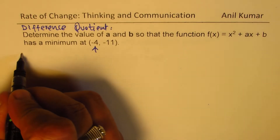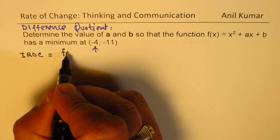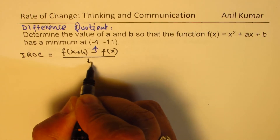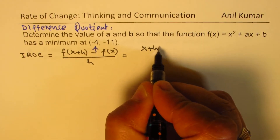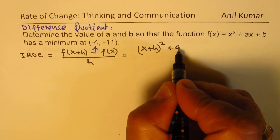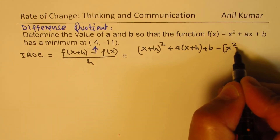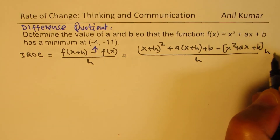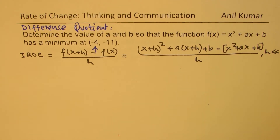We will find the instantaneous rate of change at a general point using: f of (x plus h) minus f of x, over h, where h is very small and approaches zero. Substituting: (x plus h) squared plus a(x plus h) plus b, minus (x squared plus ax plus b), all over h.